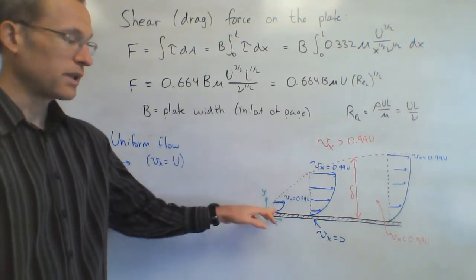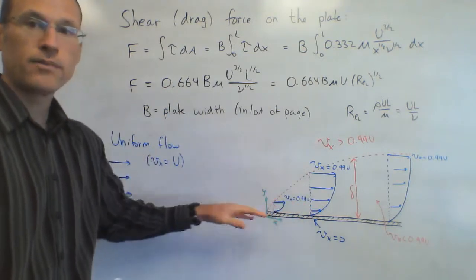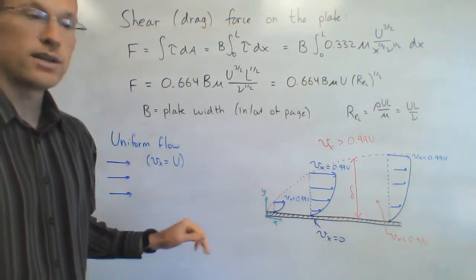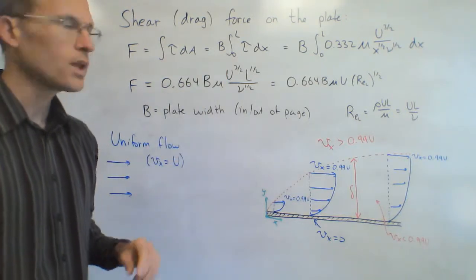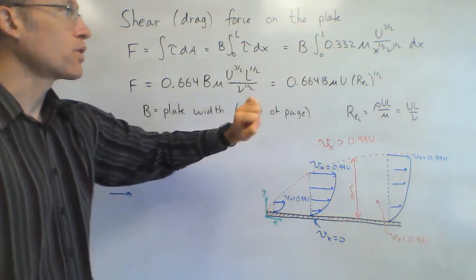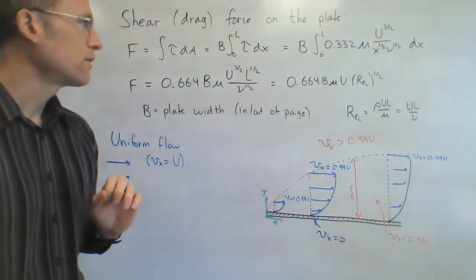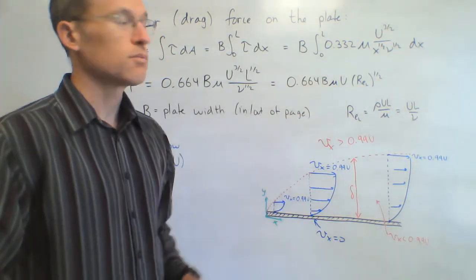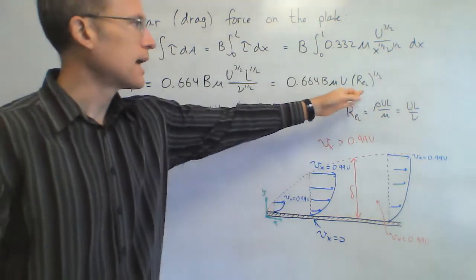The shear stress on the surface of the plate is important because that is how we find the drag force acting on the plate. Integrating that shear stress over the area gives the drag force. Taking the tau equation and integrating over the length, multiplied by width capital B, the x to the −1/2 integrates to x to the 1/2, so 0.332 becomes 0.664. The result is: force equals 0.664 times B times mu times U times Reynolds number based on L to the 1/2 power.